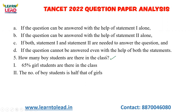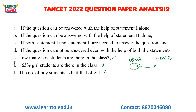Question: How many boys students are there in the class? Statement 1: 65% of students are girls, so the balance 35% are boys. Statement 2: The number of boys students is half the number of girls. Even if I combine both statements, I cannot get the exact number of boys students. My answer is option D.